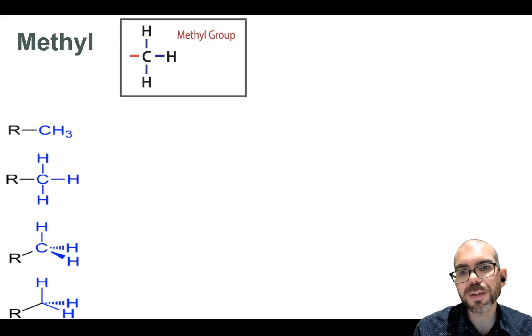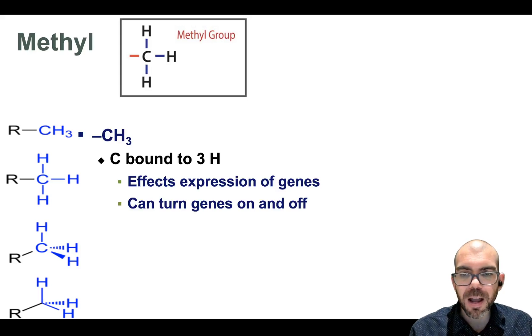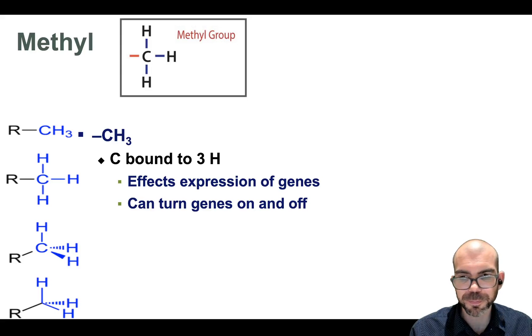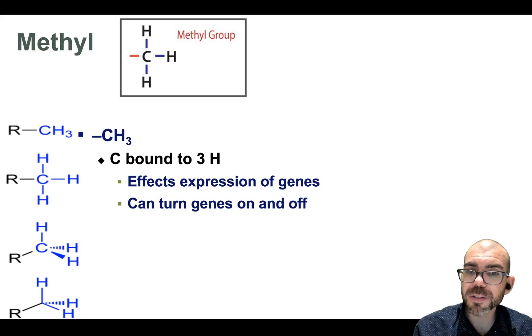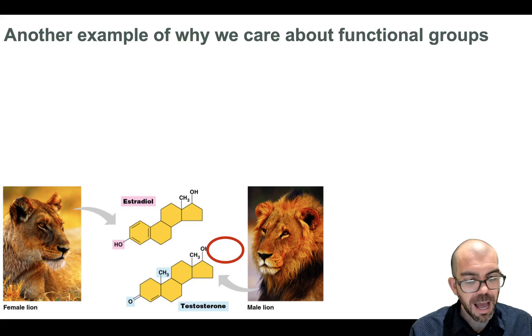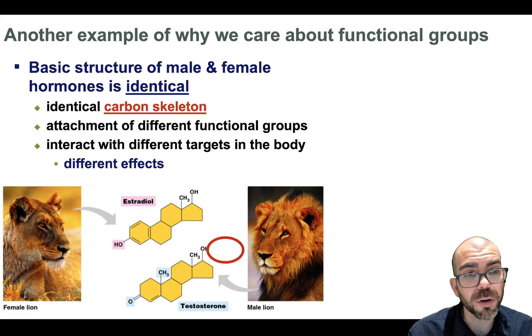Next up, methyl. Methyl group is a CH3. Now, methyls, they're able to turn genes on and off, and that's all they really do. We won't get to this for a couple months, but if a methyl group is added, it can turn DNA off. If it's removed, it can turn DNA on. And those are our greatest hits of functional groups.